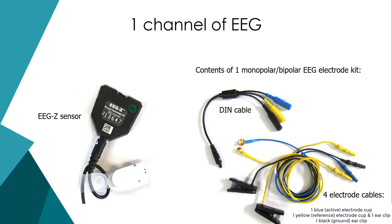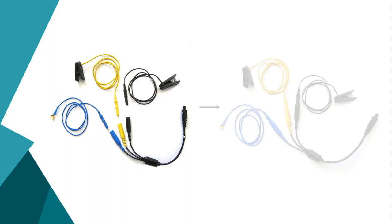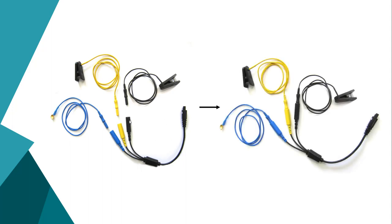In the equipment you receive — what we call a monopolar bipolar electrode kit — you'll have four different electrode cables: one blue cup for the active electrode, a yellow cup reference, a yellow ear clip reference, and a single black ear clip ground. For this monopolar referential montage today, we're going to be using the blue cup, the yellow earlobe clip, and the black earlobe clip. You insert the electrodes into the little DIN cable plugs, push all the way in — it's very snug — and you'll hear a click when it's done going in as deep as it can.